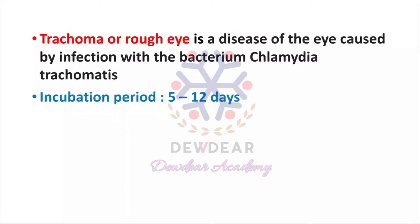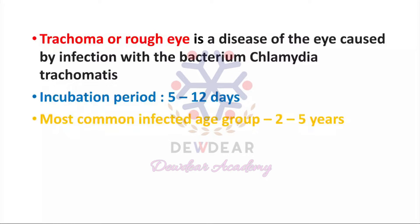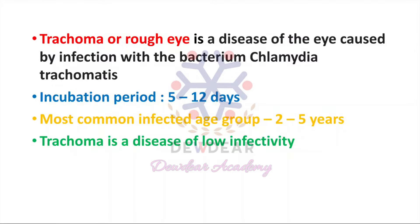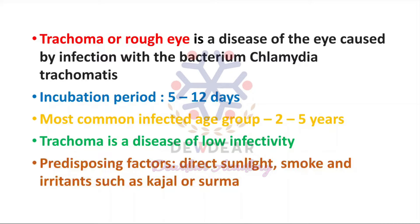The incubation period of trachoma is 5 to 12 days. The most commonly infected age group is two to five years. Regarding communicability, trachoma is a disease of low infectivity. The predisposing factors include direct sunlight, smoke, and irritants like kajal and surma.